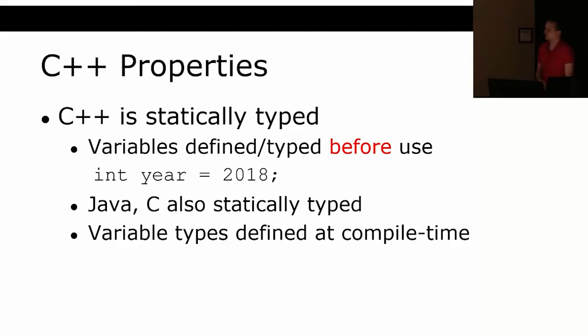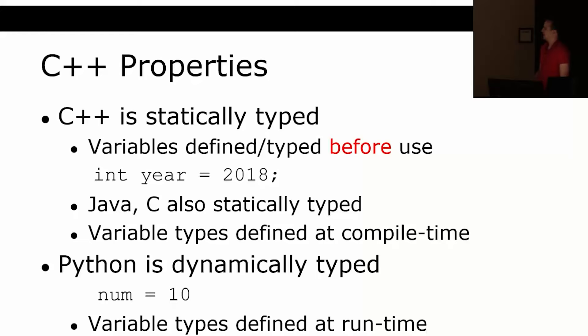Some properties of C++: it is statically typed, meaning we have to declare the type before we use it. Java and C are also statically typed. Something like Python or JavaScript is not — you can just declare a variable and set it to whatever you want. In C++, variable types are defined at compile time. For example, in Python you can say `num = 10` and then reassign it to a float or a string; in C++ you cannot do that.